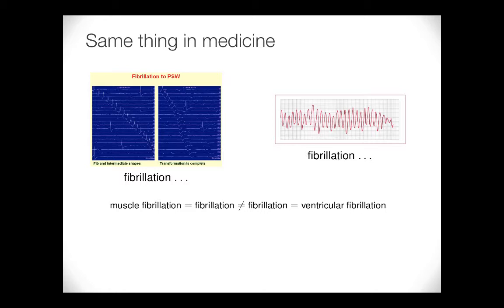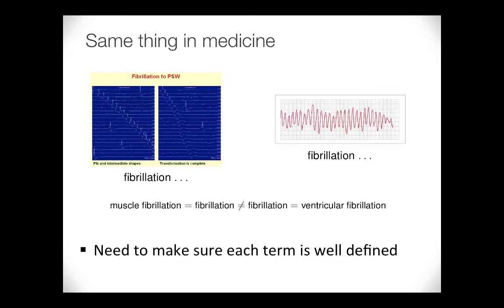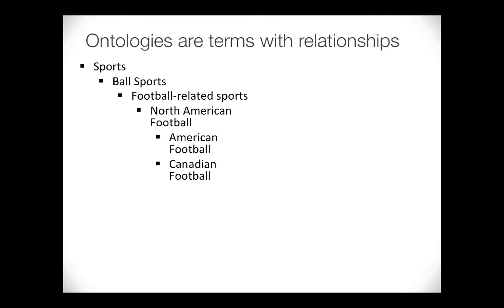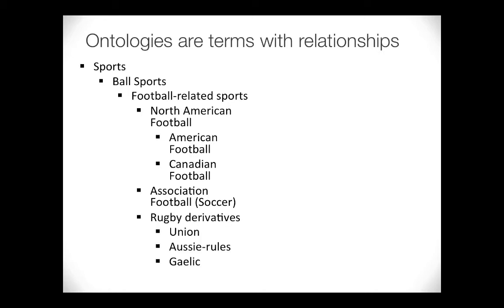The same disambiguation issue is true in medicine — muscle fibrillation versus ventricular fibrillation: people may just say 'fibrillation' without specifying which one. So what are ontologies? Ontologies are terms with relationships. If I were to build a sports ontology we could have: sports → ball sports → football-related sports → North American football (American football, Canadian football), association football or soccer, and rugby derivatives which would include union, Aussie rules football, and Gaelic football. This shows that rugby union is more closely related to Aussie rules than to association football, allowing us to do logic on these terms.